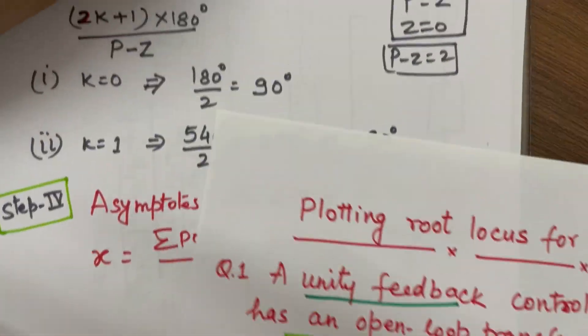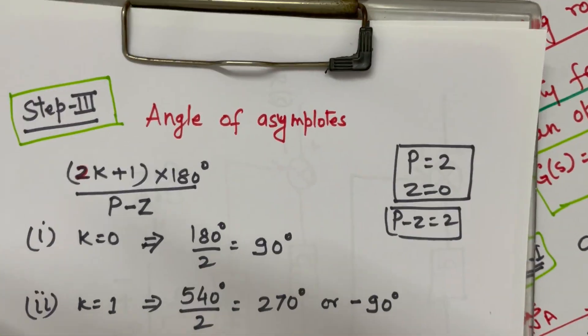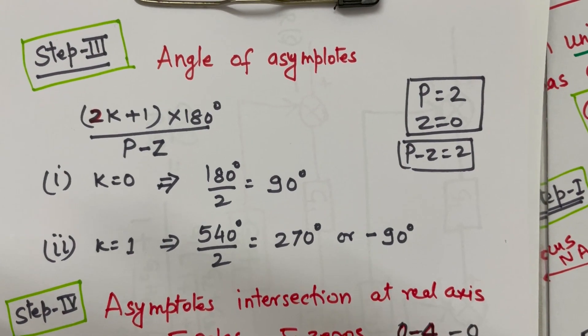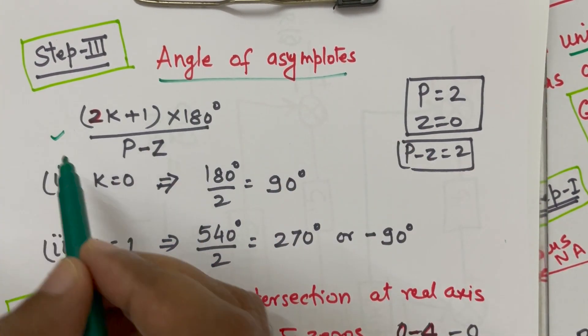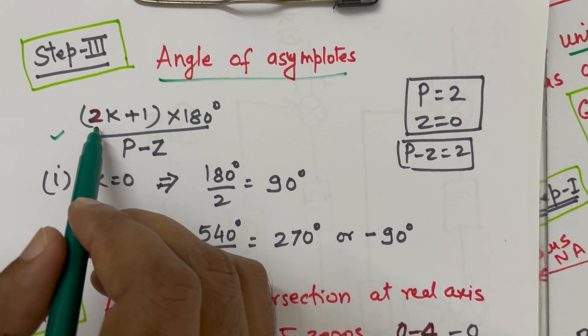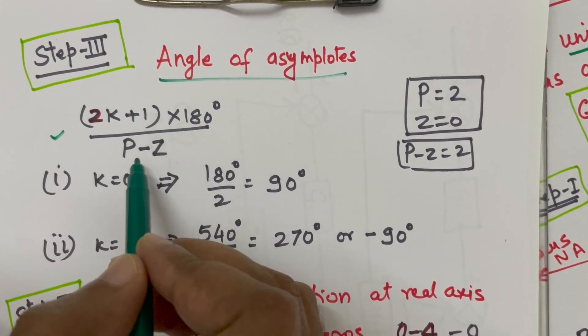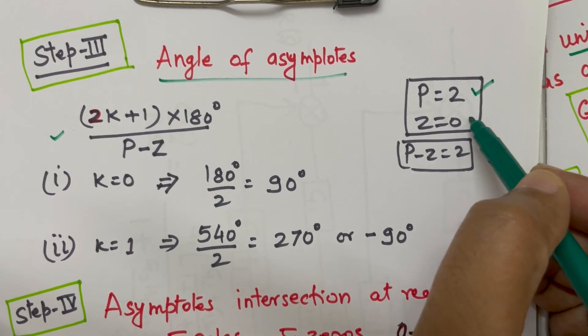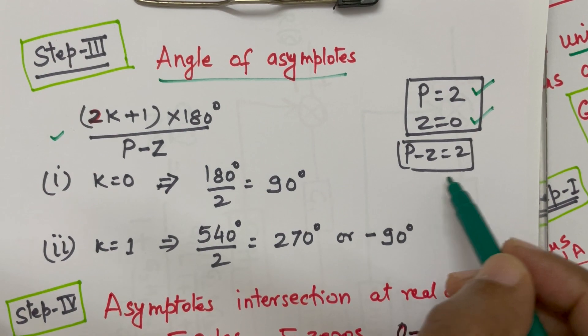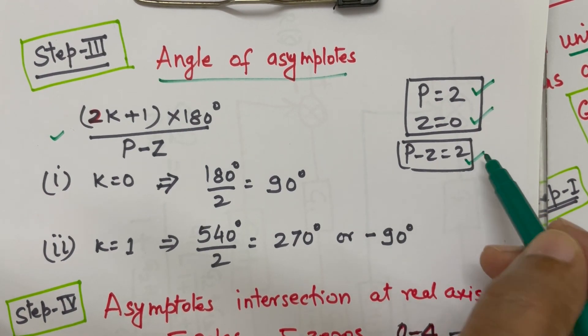Now, step 3 will be finding the angle of asymptote. Angle of asymptote we find by using this formula. This formula is 2k plus 1 into 180 degree divided by number of poles minus number of zeros. We have already calculated number of poles is 2, number of zeros is 0. So, the difference of P minus Z is 2.